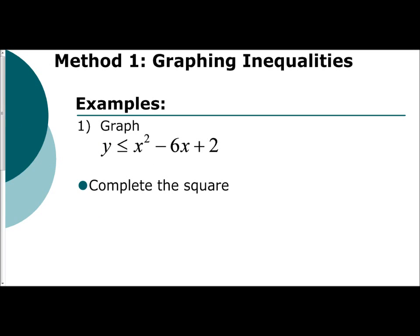So let's take a look at the first example. We're asked to graph y is less than or equal to x squared minus 6x plus 2. The first thing we're going to do is complete the square. I'm going to get the quadratic and linear term isolated by subtracting 2, giving us y minus 2 is less than or equal to x squared minus 6x.